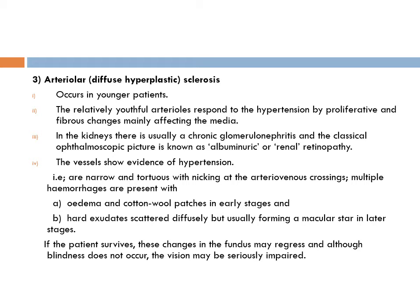In summary for this third category: young patients respond to hypertension by proliferative or fibrous changes in the vessel wall; the kidneys show chronic glomerulonephritis; the fundus picture is also known as albuminuric or renal retinopathy, with edema, cotton wool spots, and hard exudates forming a macular star. Prognosis is poor because of collateral renal damage. Treatment is aimed at the renal damage, not the retina — if the patient survives, fundus changes may regress. Blindness may not occur but vision is seriously impaired due to macular involvement.